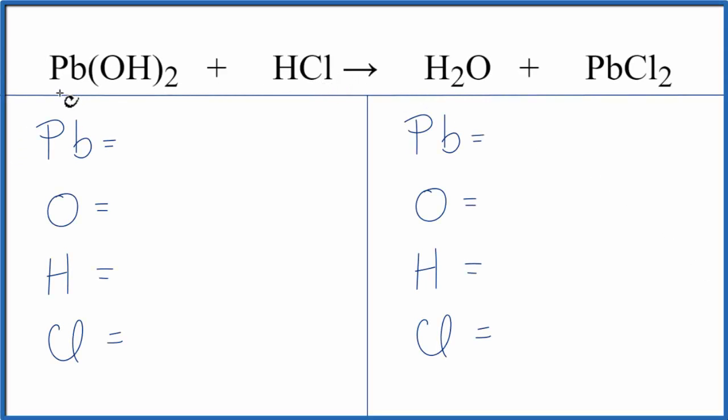In this video, we'll balance the equation Pb(OH)₂ plus HCl. That's lead 2 hydroxide plus hydrochloric acid. Let's count the atoms up on each side.